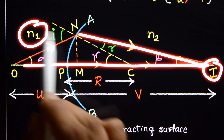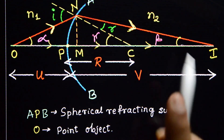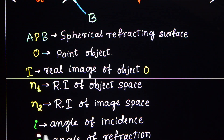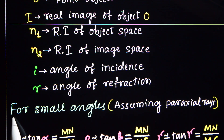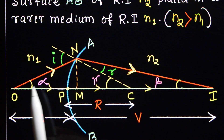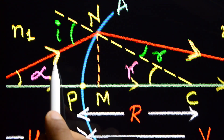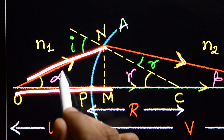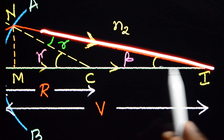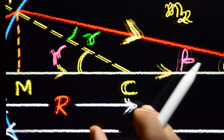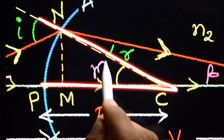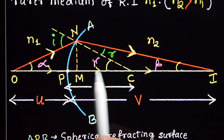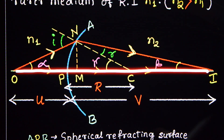N1 is the refractive index of object space, and N2 is the refractive index of image space. I is the angle of incidence and r is the angle of refraction. Alpha is the angle between the incident ray and the principal axis. Beta is the angle between the refracted ray and the principal axis. Gamma is the angle between the normal and the principal axis. Alpha, beta, gamma, i, and r are all very small because we assume these are paraxial rays — rays very close to the principal axis.